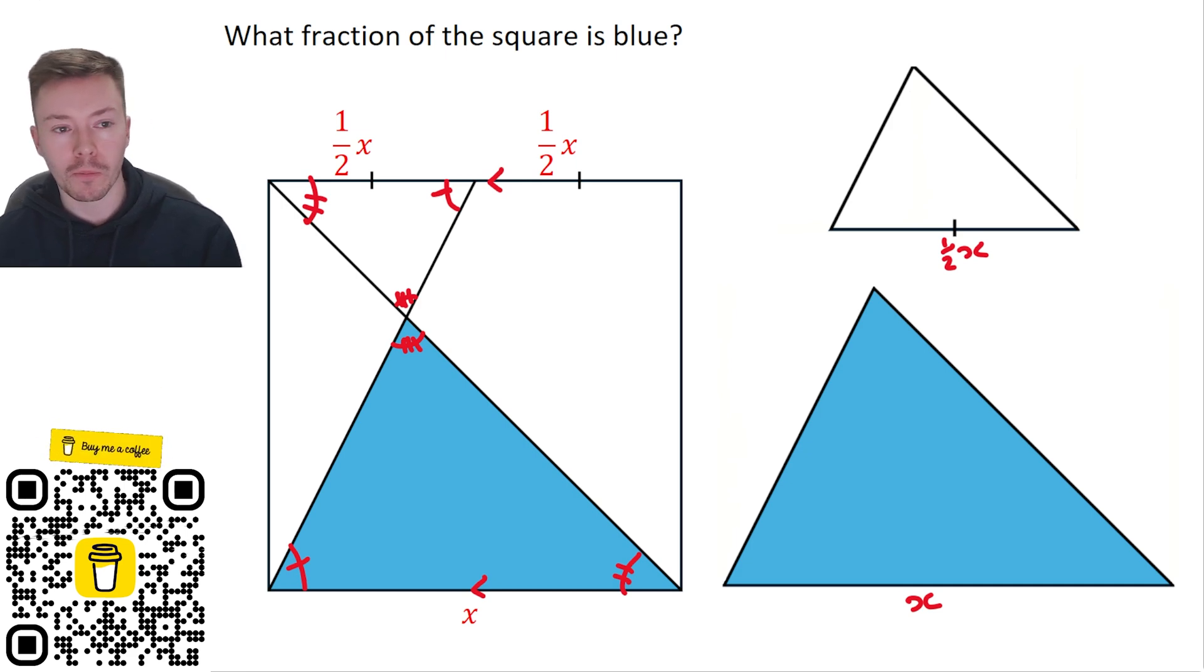Okay, now what we then need to think about, well, the total height is x because it's a square. Now what we've got is that the height of each of these are split into a third and two thirds. Okay, so this height here...